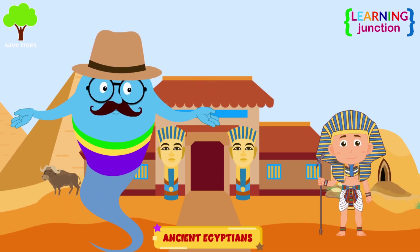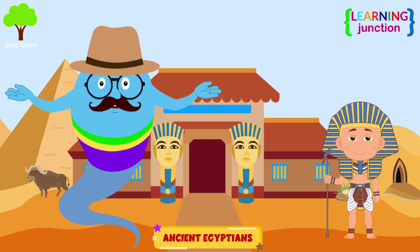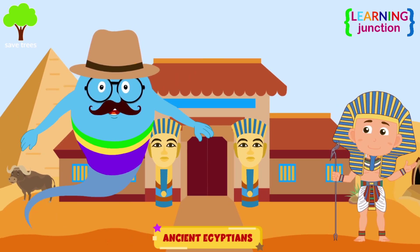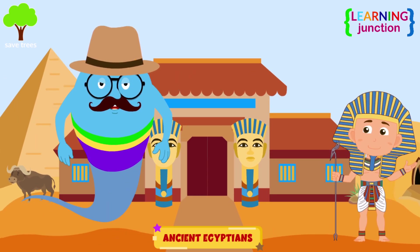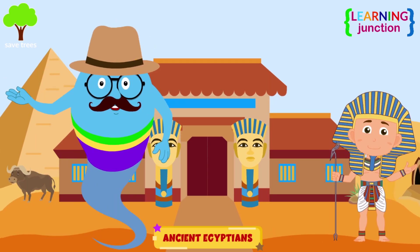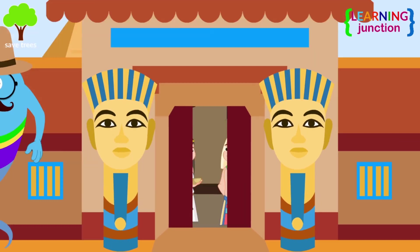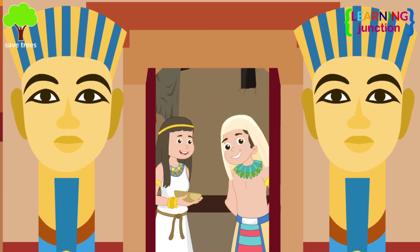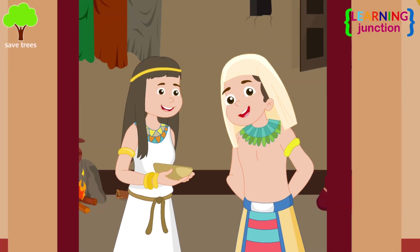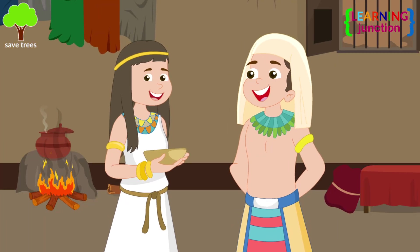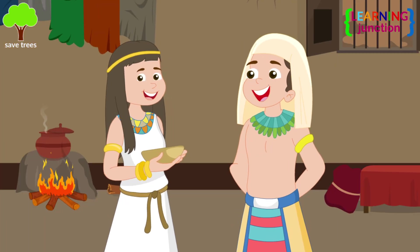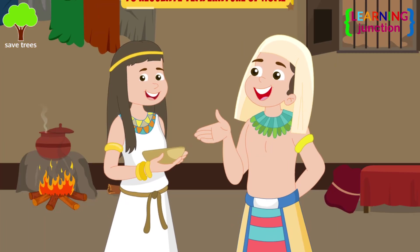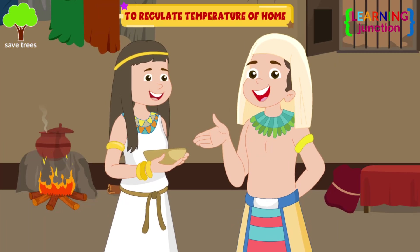Ancient Egyptians were the first people known to use the energy from sunlight to heat their homes. They designed their houses to store the sun's heat in the walls as a way to regulate the temperature of the home.